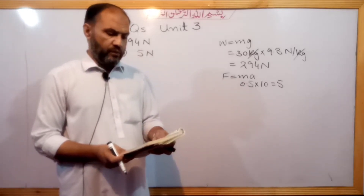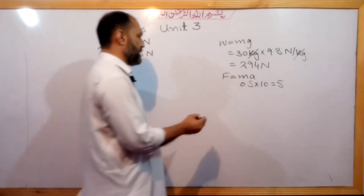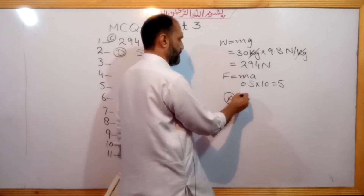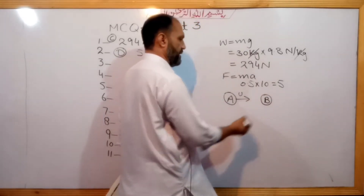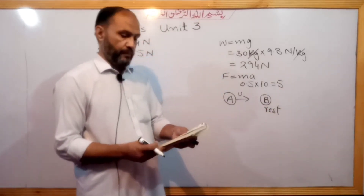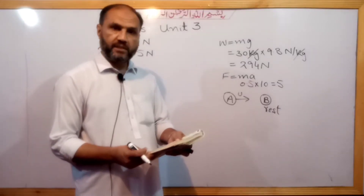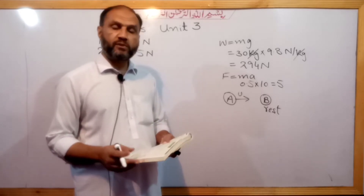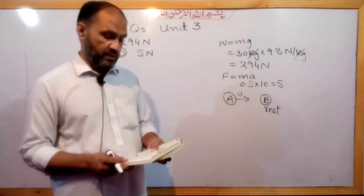Question number 3. Ball A collides with ball B, which is at rest. After the collision, which of the following conditions is not possible? We will check each option to determine which outcome cannot occur.